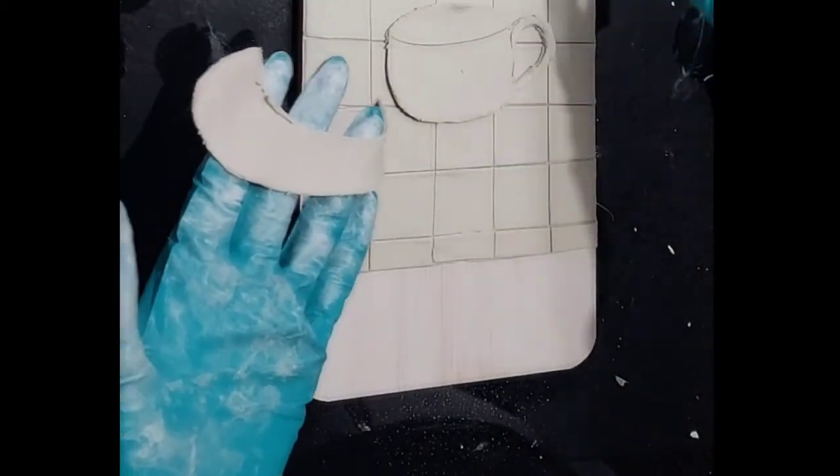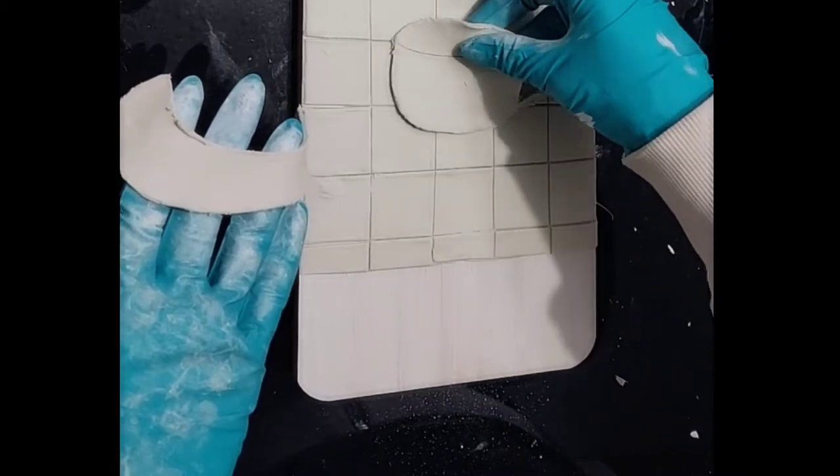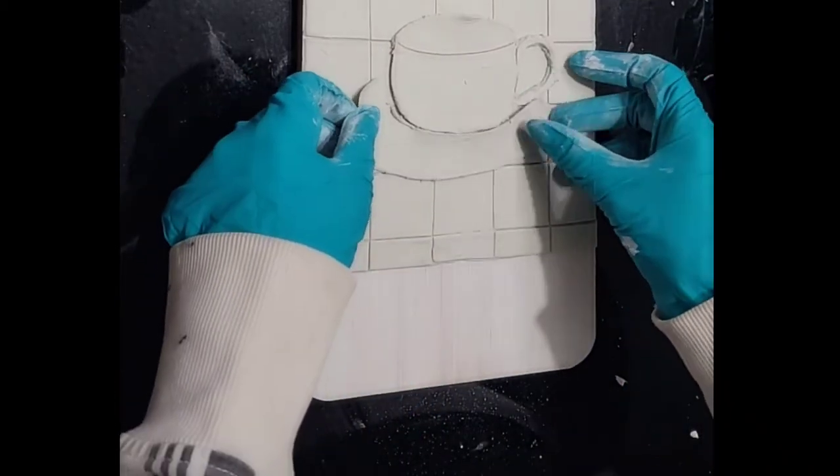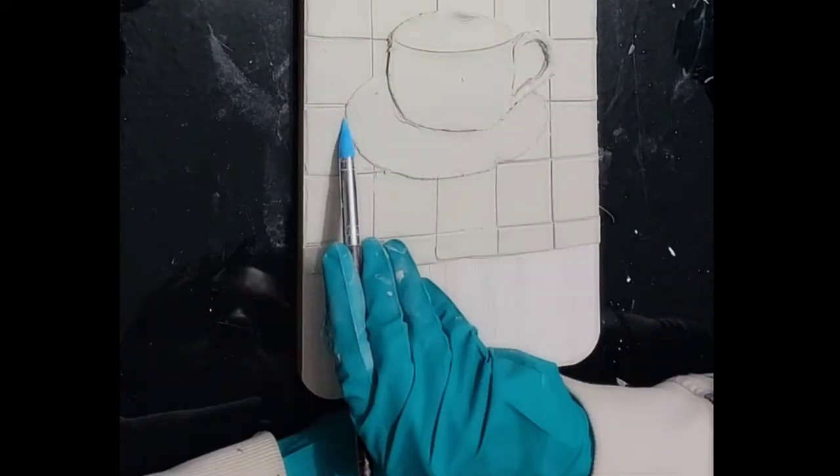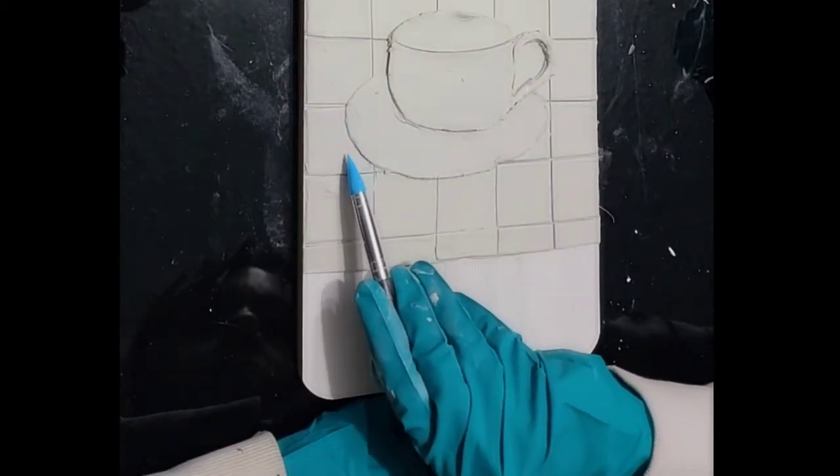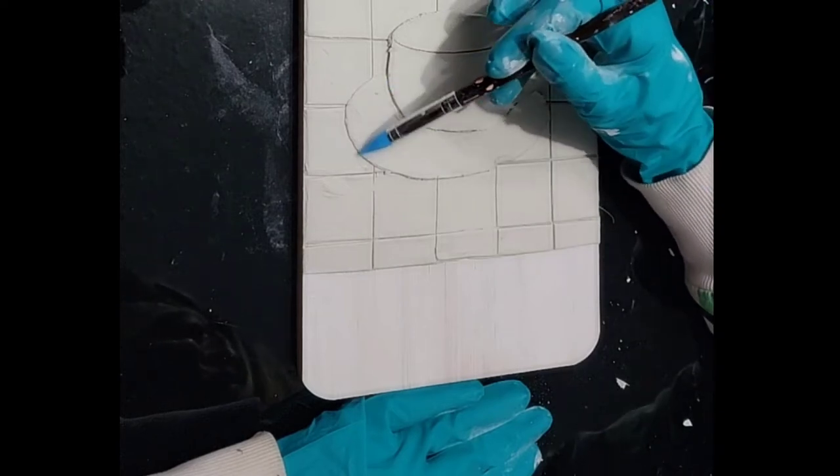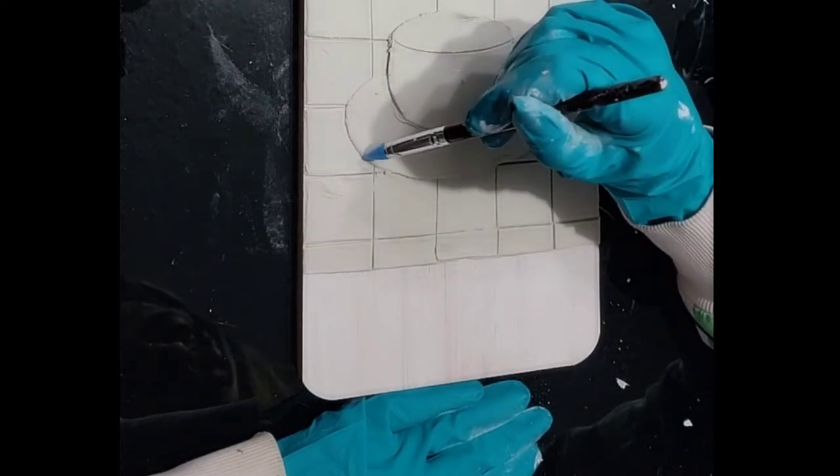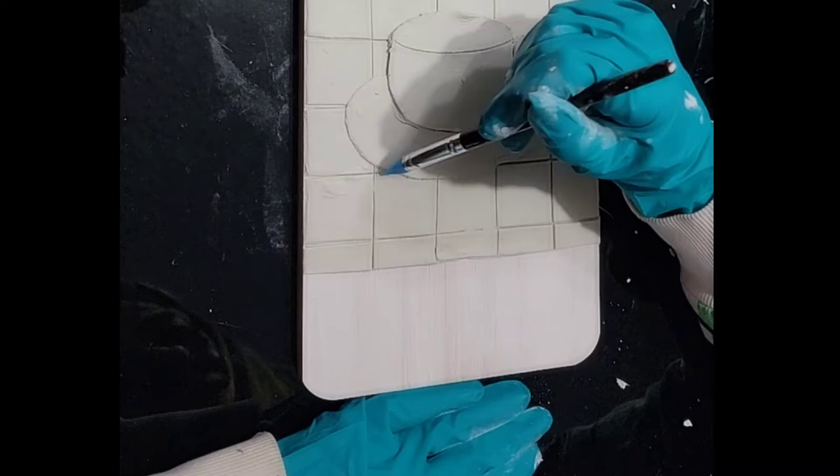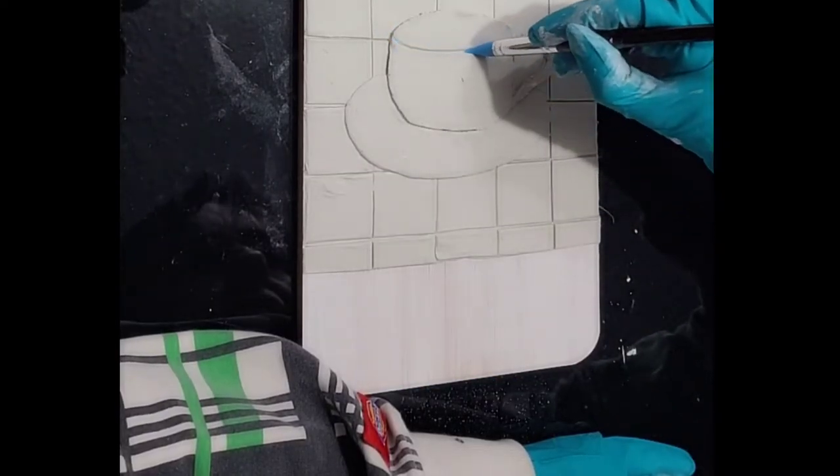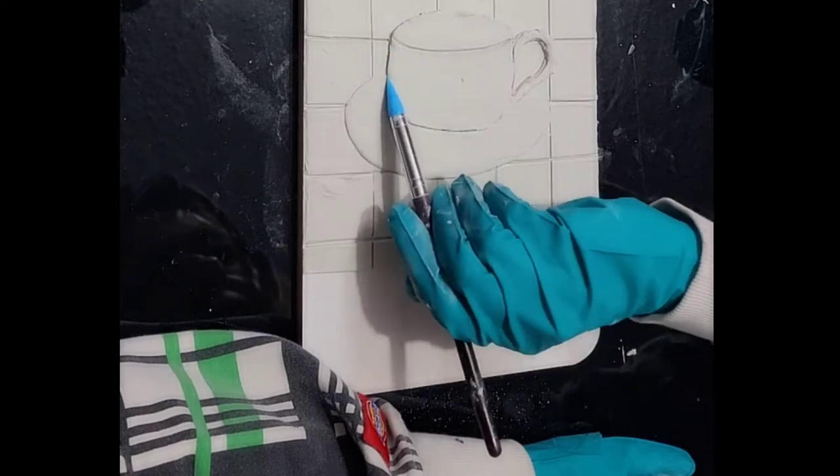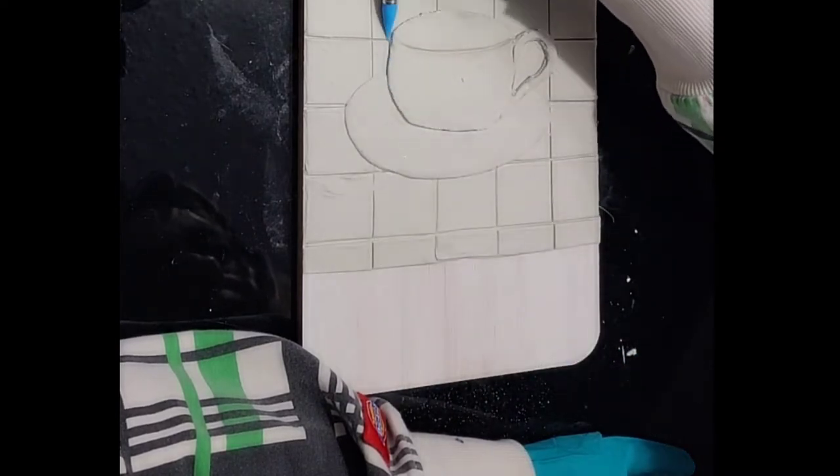We're going to put those right onto our tile board there, placing them wherever you want them to be. Then we're just going to use our tool here and smooth out the edges. This is just tools I got off Amazon—it's a clay tool set that comes with all these silicone tip tools. They work great for smoothing—I love them.